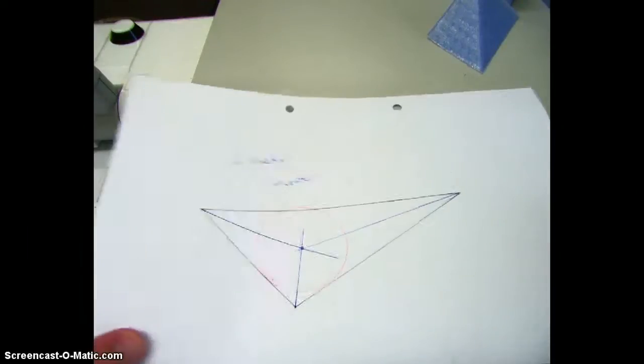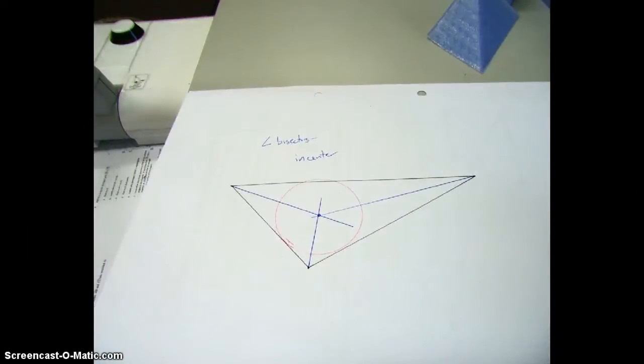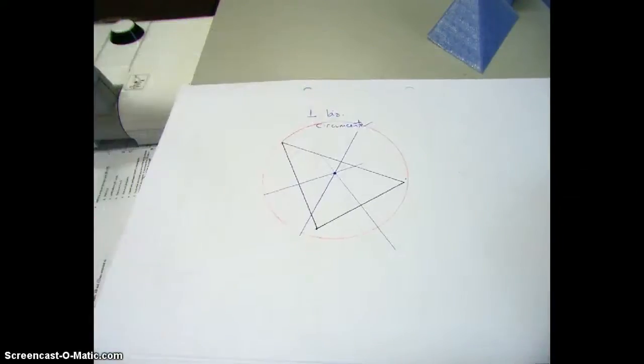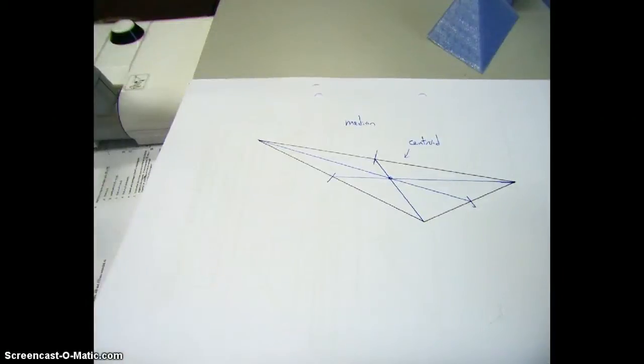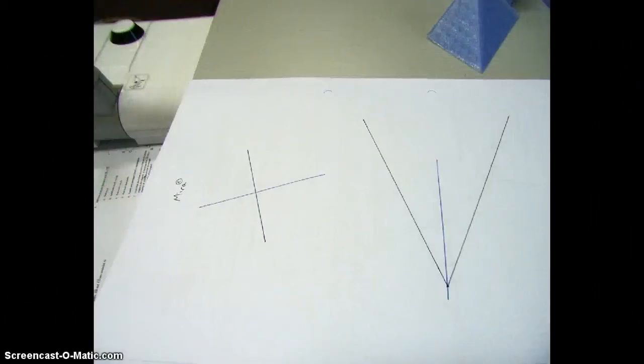It's all about making perpendicular bisectors and angle bisectors, and that's it. And on the Mira, and with a compass and straightedge, those are things we've all done. Good luck. May the force be with you.